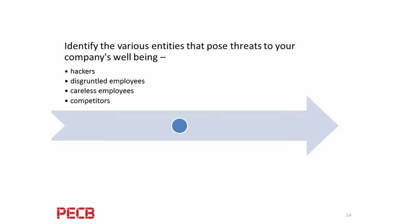You want to look at various entities that pose threats to your company's well-being: hackers, disgruntled employees, careless employees, and competitors. If you see an employee coming in at odd hours working many hours when they never did before, and your office is currently having layoffs, you need to monitor that person. If they're accessing the system at midnight when their hours are 9 to 5, why are they there? These are things you'll want to look at. Addressing careless employees means training.